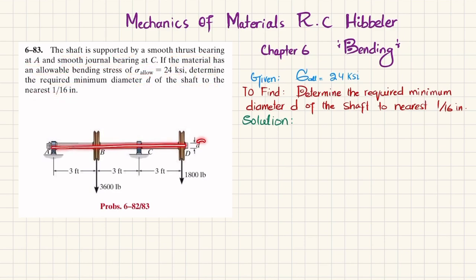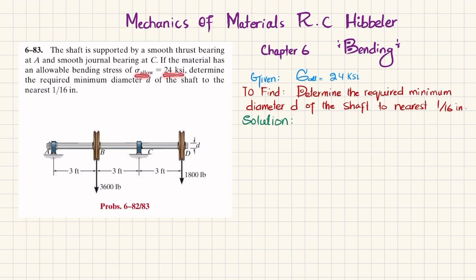You can see this is the shaft having diameter d. At A we have a smooth thrust bearing and at C we have a smooth journal bearing. At B we have a load of 3600 pounds and at D we have a load of 1800 pounds. The allowable bending stress is 24 ksi. We have to determine the smallest diameter d to the nearest 1/16 inch.